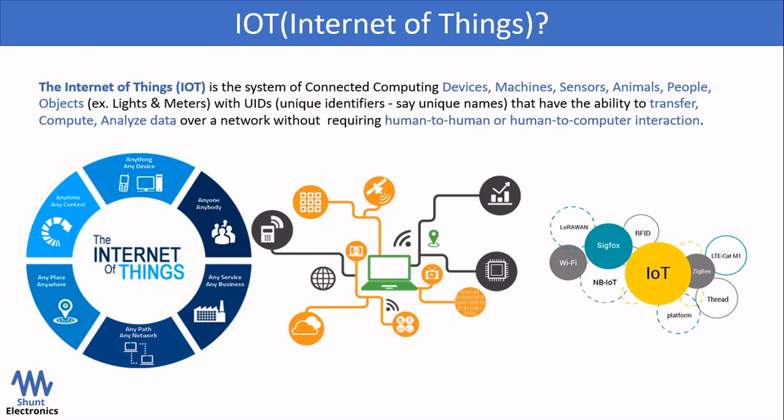So this is a system of connected devices that can transfer, compute, and analyze data and can take actions based on that data without requiring human-to-human and human-to-computer interaction. Like NB-IoT, there are other networks also like SIGFOX, LoRaWAN, RFID, Wi-Fi, THREAD, ZigBee, LTE, MCAT, etc. that can be utilized as an IoT network.